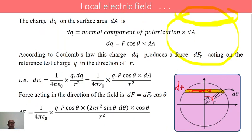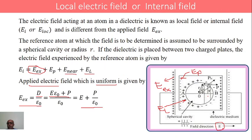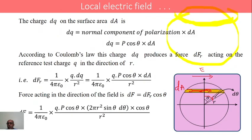Now let us find the charges accumulated on this shaded area. dQ, the charge on this shaded area, equals the normal component of polarization multiplied by the area. The normal component of polarization on this shaded portion is P cos theta. Therefore, dQ equals P cos theta into dA.